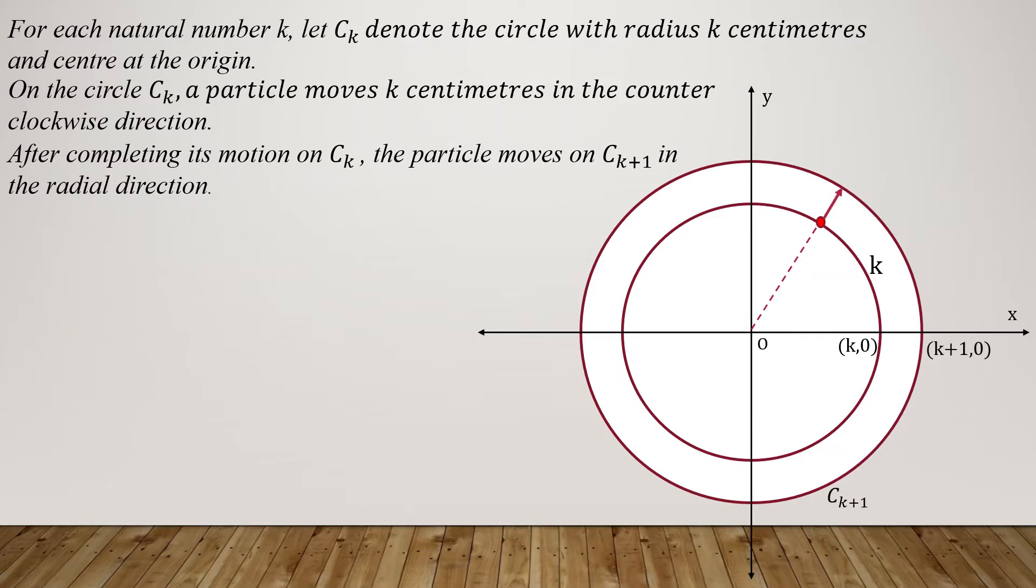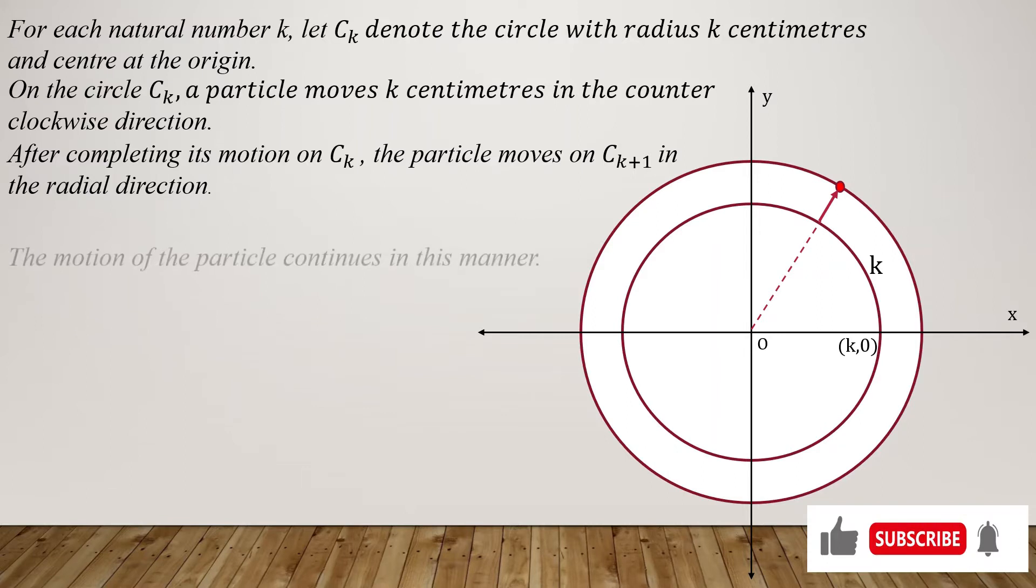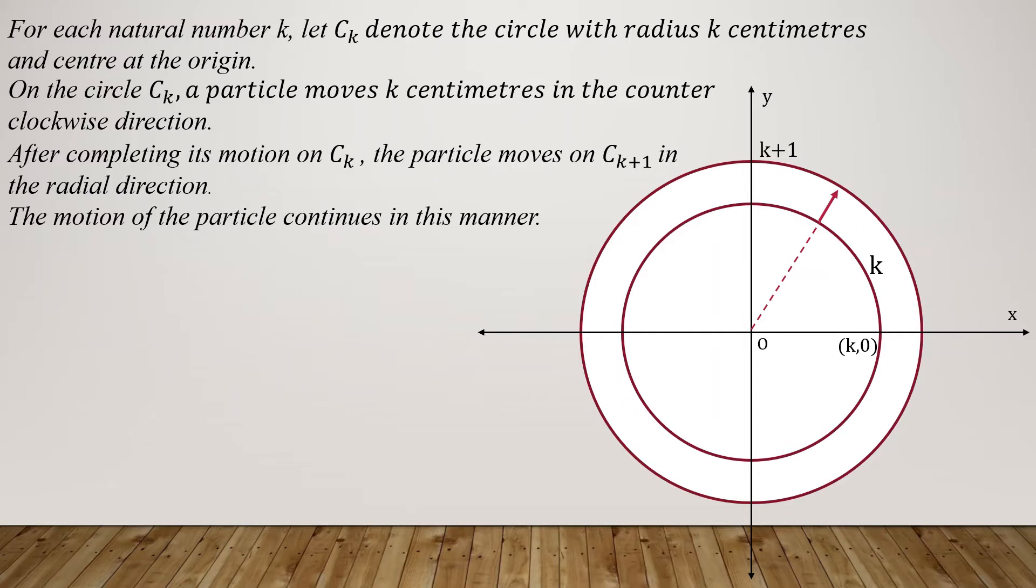The motion of the particle continues in this manner. Similarly, the particle on Ck+1 moves a distance of k+1 radially on the arc and ends up here.